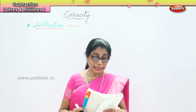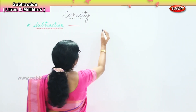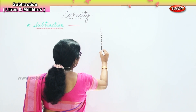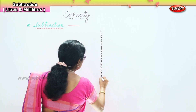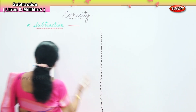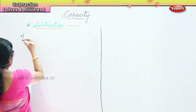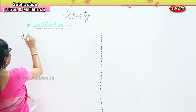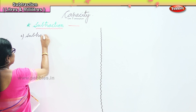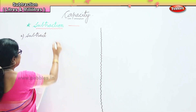We'll do just two sums to help us through the understanding of subtraction in liters and milliliters. The first sum I have for you is: subtract 7...